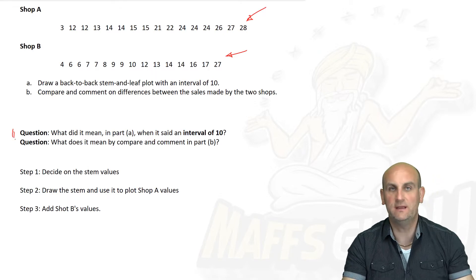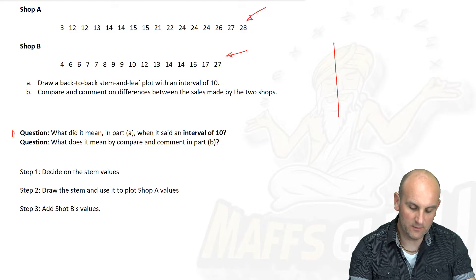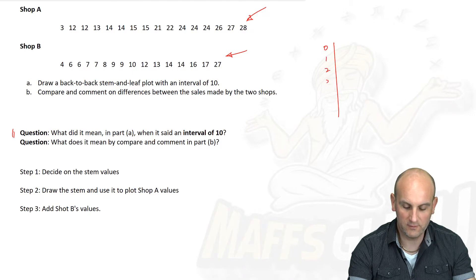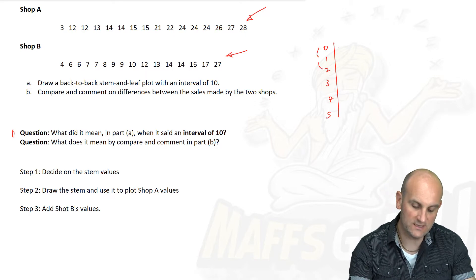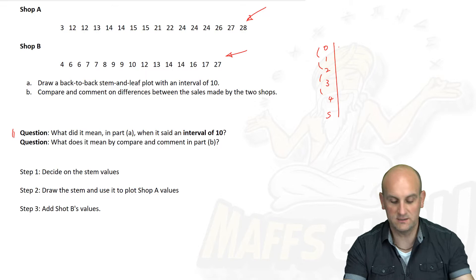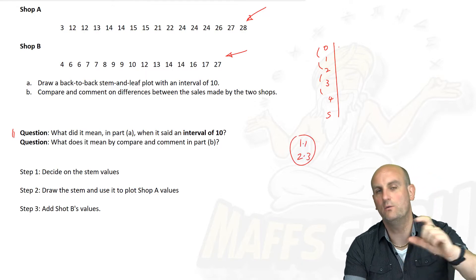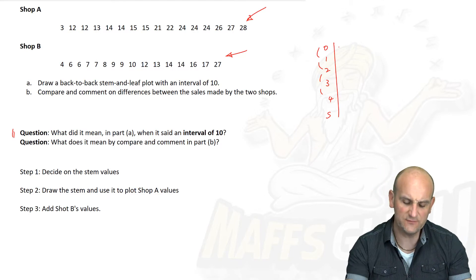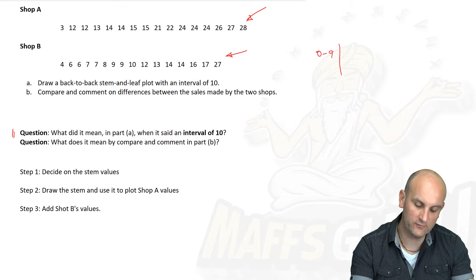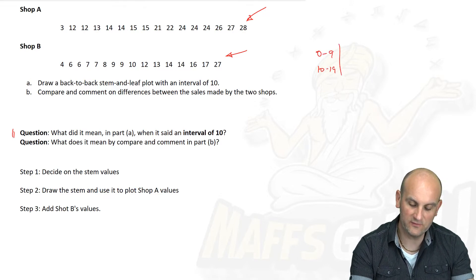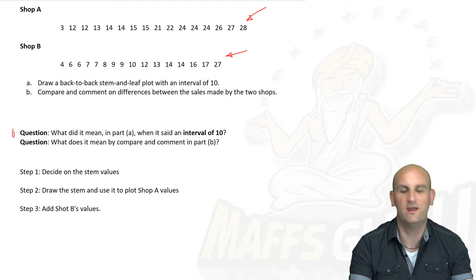It wants us to draw a back-to-back stem and leaf plot with an interval of 10. What's an interval of 10 mean? If we go back to that example where we had 0, 1, 2, 3, 4, 5, these are all decimal numbers. You would argue these would have an interval of 1. When it has an interval of 10, what we're actually saying is that effectively the numbers 0 to 9 go in the first one, 10 to 19 go in the second, 20 to 29 go in the third.